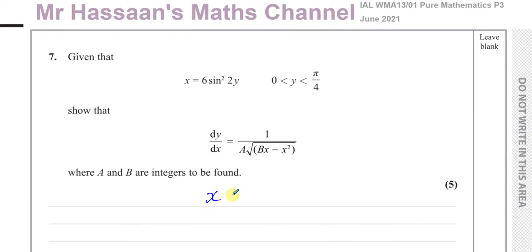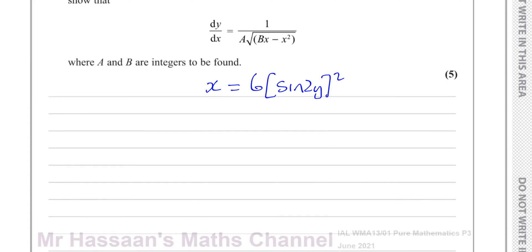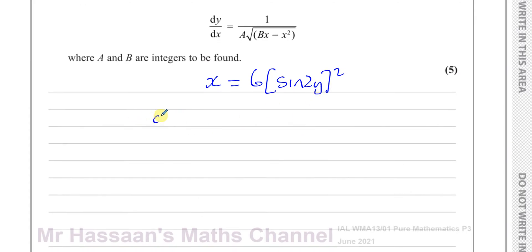Let's write x in a way that's easy to differentiate. Sine squared 2y is the same as sine of 2y, all squared. That's a nice way of writing it. Now I can use the chain rule. Finding dx/dy — differentiating x with respect to y — we do 2 times 6, which is 12, times sine 2y.